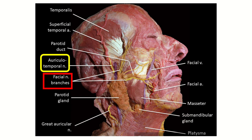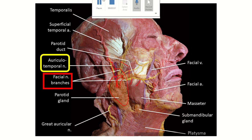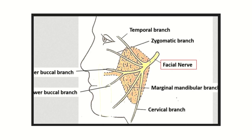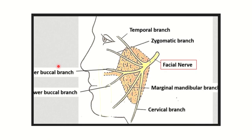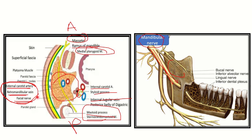Here we can see the auriculotemporal nerve — it travels and touches the parotid gland, so the auriculotemporal nerve may be injured during this procedure. The facial nerve and its five branches terminate and start within the substance of the parotid gland, so there is a risk of injury to the facial nerve branches. The five terminal branches are: temporal, zygomatic, buccal (upper and lower), marginal mandibular, and cervical. So the auriculotemporal nerve, five terminal branches of the facial nerve, external carotid artery, and retromandibular vein all carry a great risk of injury.